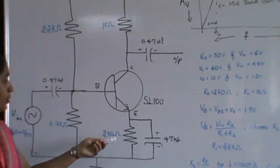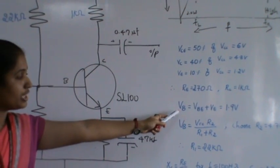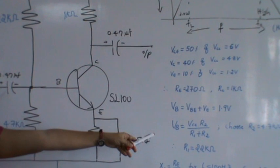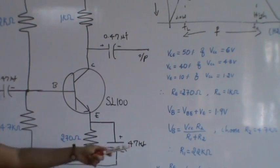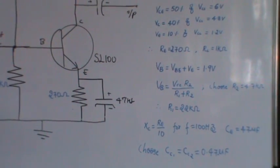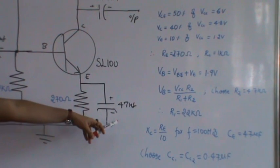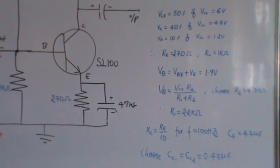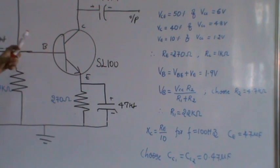From this the circuit parameters are designed, that is RE is equal to 270 ohm which is connected here and RC is equal to 1 kilo ohm. And from the base voltage VB is equal to VBE plus VE which is equal to 1.9 volt. By using the voltage divider rule VB is equal to VCC into R2 by R1 plus R2. By choosing R2 is equal to 4.7 kilo ohm, R1 is obtained as 22 kilo ohm.